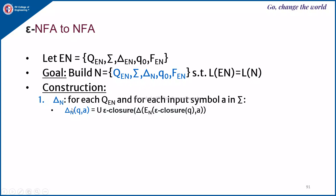Delta N is constructed using the following procedure: for each state in Q_en and for each input symbol A in sigma, delta N of (Q, A) is the union of epsilon closures of delta_en of (Q, A). To find delta N of (Q, A): first find the epsilon closure of that state — you may get multiple states. For each of those states find delta of that state on A and take the union. Then for each of those resulting states take the epsilon closure and perform the union. This is how the delta of a state in the equivalent NFA is found.